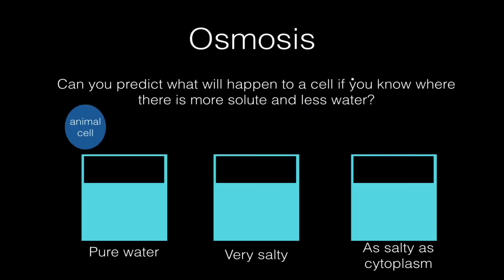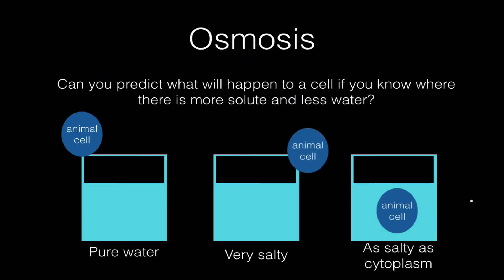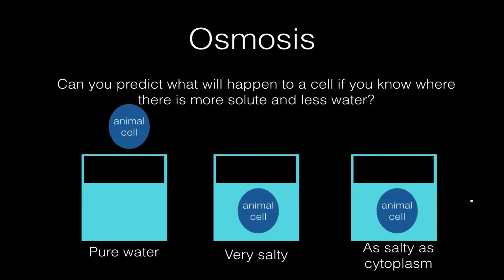Now, we can use this idea of osmosis to predict what's going to happen to different cells if we place them in different environments. Here we have a beaker of pure water, here we have a beaker of very salty water, and here we have a beaker of water that is an equal saltiness to the cytoplasm of the cell. We're going to put three identical animal cells in each of these environments. What do you think is going to happen?